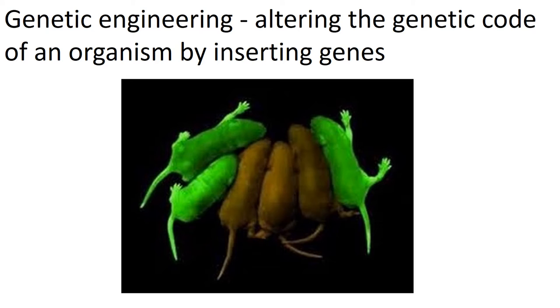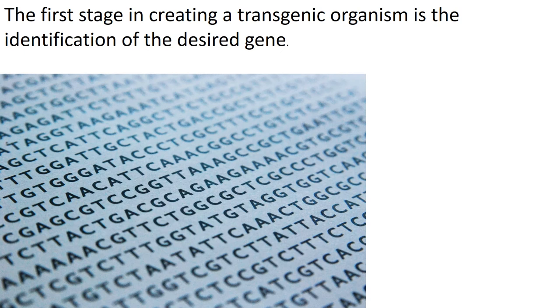Genetic engineering is adding genes to other creatures, creating what's called a transgenic organism. The first thing that needs to be done is to identify the desired gene. For this you need to know the sequence of bases — the A, T, C, G bases.